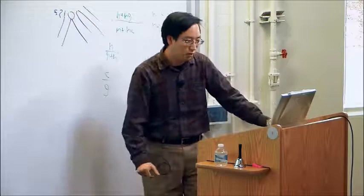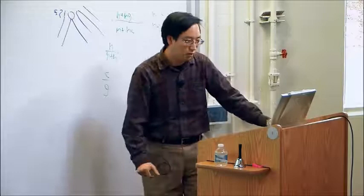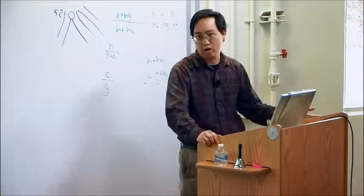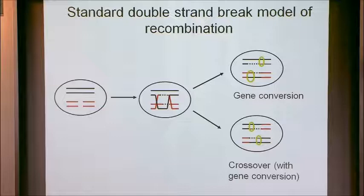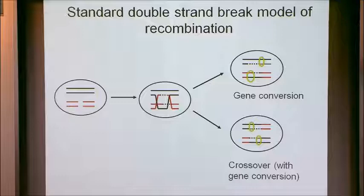First, a little biological background. We're going to be dealing with recombination, which is a fundamental biological process, at least in diploids. In meiosis, we have pairs of homologous chromosomes. Recombination is a process that, generally speaking, produces mosaic descendant chromosomes from these pairs of homologous chromosomes. There are different models for how that happens.